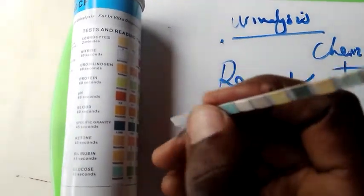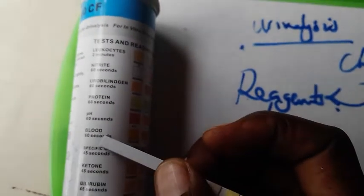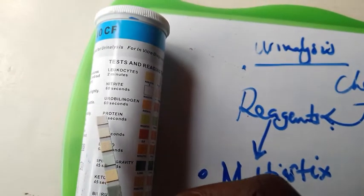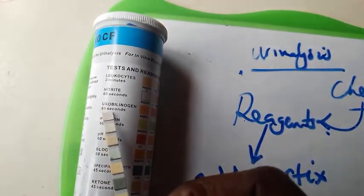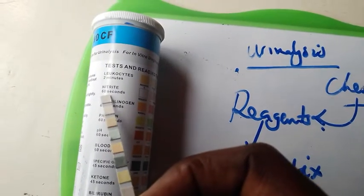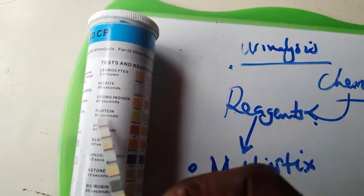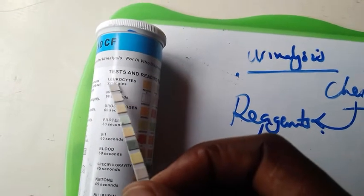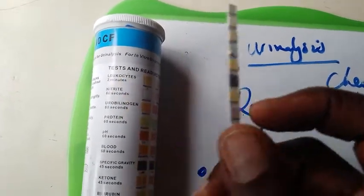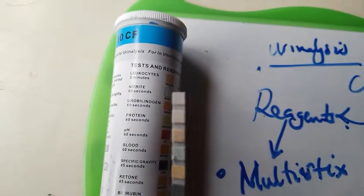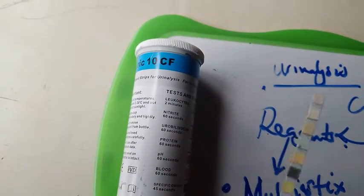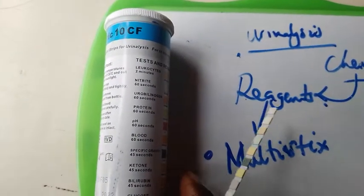For other readings, for example, if you check out blood and potential hydrogen here and protein, urinary nitrogen nitrites, you need to get these after 60 seconds, then leukocytes you read after two minutes. As you are reading 45 seconds, just continue reading there until you finish because by the time you reach to leukocytes, two minutes will elapse.